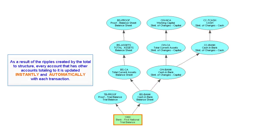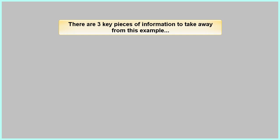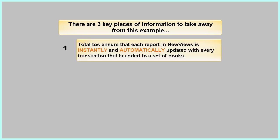As a result of the ripples created by the Total To structure, every account that has other accounts totaling to it is updated instantly and automatically with each transaction. There are three key pieces of information to take away from this example. Total Tos ensure that each report in New Views is instantly and automatically updated with every transaction that is added to a set of books.